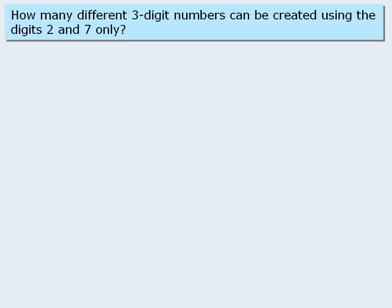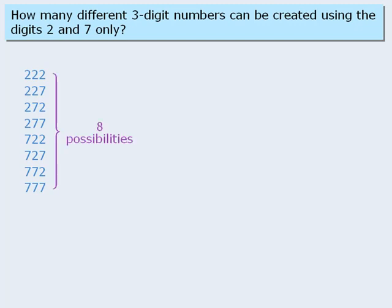So, using only twos and sevens, the smallest number we can create is 222. The next number is 227, then 272, and so on all the way to 777. So, we can see here that there are eight possible numbers that satisfy the conditions in the question.